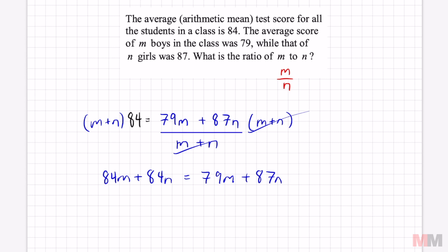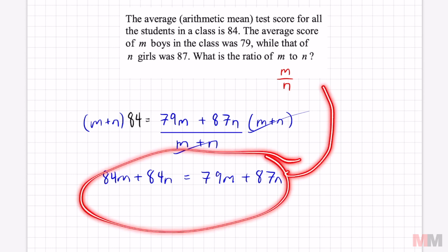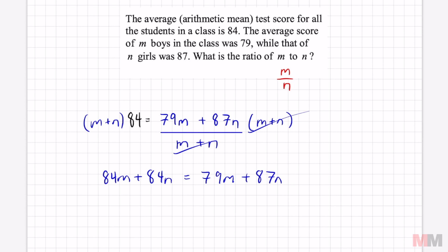If you get lost on what you're doing, we're just trying to get this ratio right here. Let's separate the m's and n's minus 79m. Let's put the m's on the left side and the n's on the right side. That simplifies to 5m equals 3n. And we're almost there.